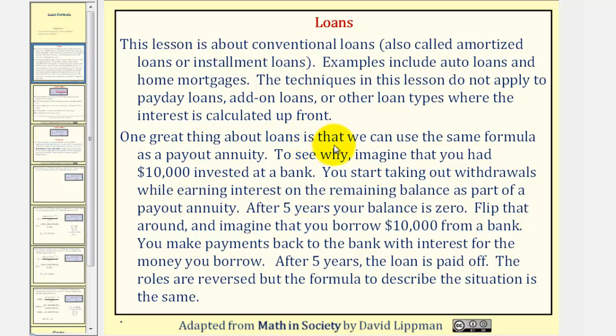One great thing about loans is that we can use the same formula as a payout annuity. To see why, imagine that you had $10,000 invested at a bank. You start taking out withdrawals while earning interest on the remaining balance as part of a payout annuity. After five years, your balance is zero. Flip that around and imagine that you borrowed $10,000 from a bank. You make payments back to the bank with interest for the money you borrow. After five years, the loan is paid off. The roles are reversed here, but the formula to describe the situation is the same.